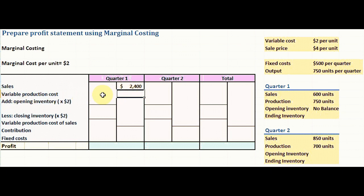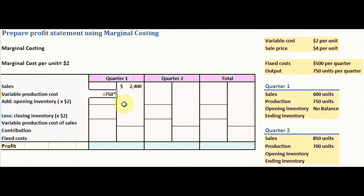Now we calculate the variable production cost for quarter one. We take the production units of 750 and multiply by the variable cost of $2 per unit. 750 times $2 gives a total variable production cost of $1,500 for quarter one.